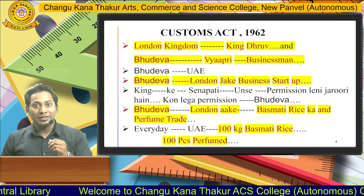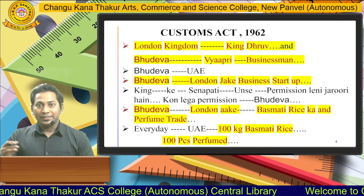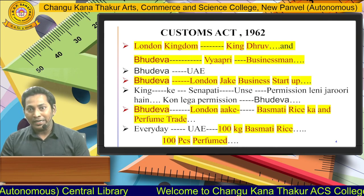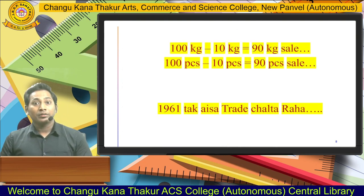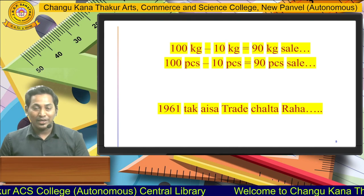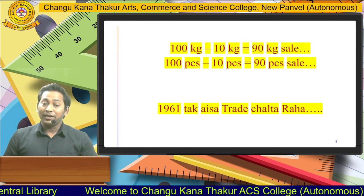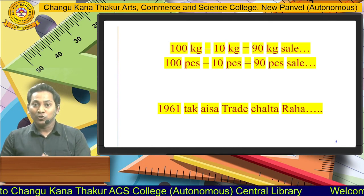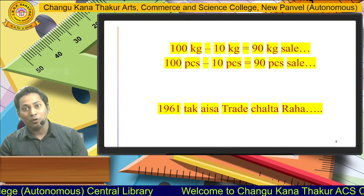These practices were noticed by King Dhruva, who informed the Senapati. The Senapati went to Bhudeva and asked what kind of business he was doing. Bhudeva said he ordered 100 kg basmati rice and 100 pieces of perfume every day. The Senapati said: as per the rules of the kingdom, you need to give 10% of your basmati rice and 10% of your perfume bottles to the kingdom as tax. These practices were done in trade in those times, and the 10% that Bhudeva gave from another country for doing business — that is called customs.